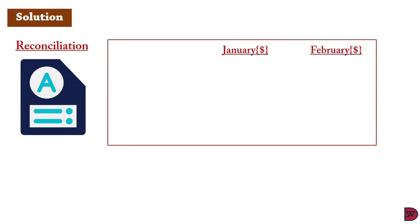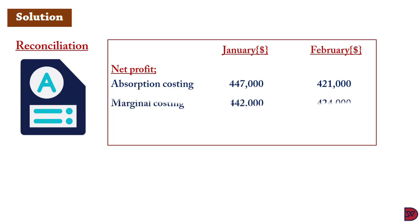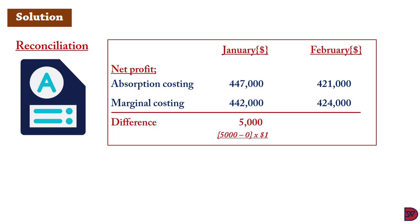In the reconciliation, absorption costing profit is $447,000 for January and $421,000 for February, while marginal costing profit is $442,000 for January and $424,000 for February. For January, the difference of $5,000 arose because there was no opening stock and closing stock was 5,000 units (5,000 × $1 fixed cost per unit = $5,000). For February, the difference is $3,000 — opening stock was 5,000 units and closing stock was 2,000 units; the net reduction of 3,000 units × $1 fixed absorption rate = $3,000.